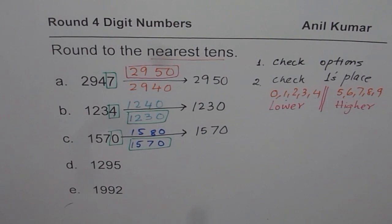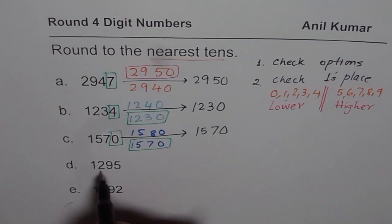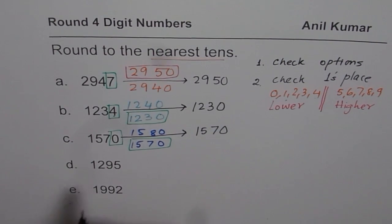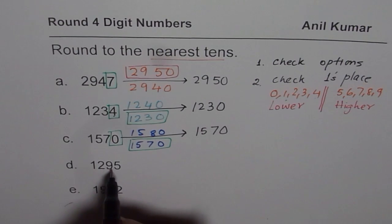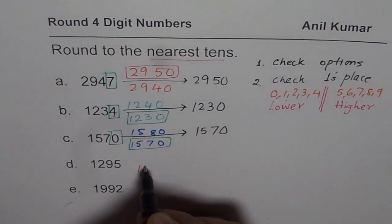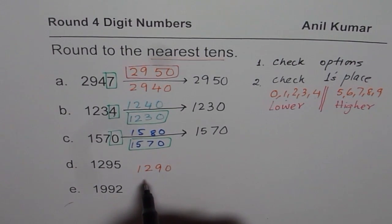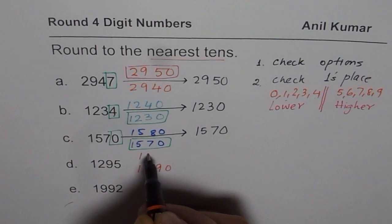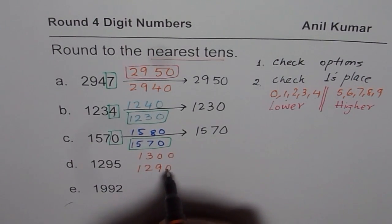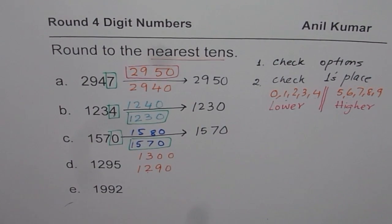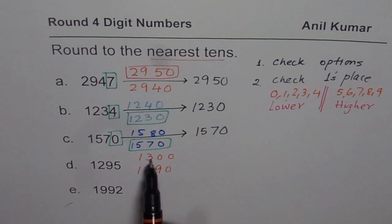Now, we have 1,295. This is tricky. 1,295 is between 1,290 and what? Plus 10 is 1,300. So 100 means 1,300. 1,290 and 1,300. So 1,295 is between 1,290 and 1,300. That is tricky.